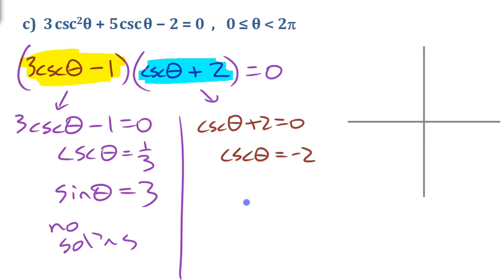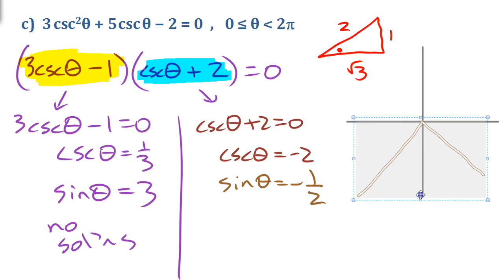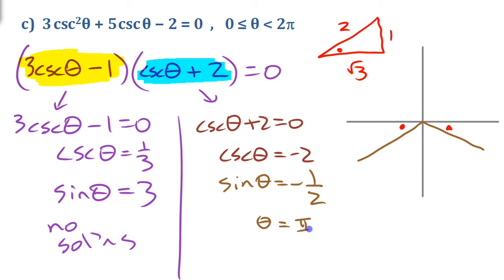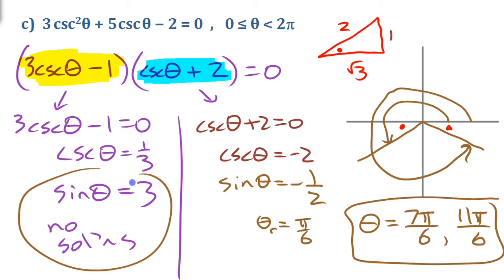The other factor: cosecant equals negative 2 means sine theta equals negative 1 half. That does give solutions. Sine being negative means quadrant 3 and quadrant 4. Sine being a half is a special ratio — it's the smaller angle from the 1, 2, root 3 triangle, giving a reference angle of pi over 6. The solutions are pi plus pi over 6 which is 7pi over 6, and 2pi minus pi over 6 which is 11pi over 6.